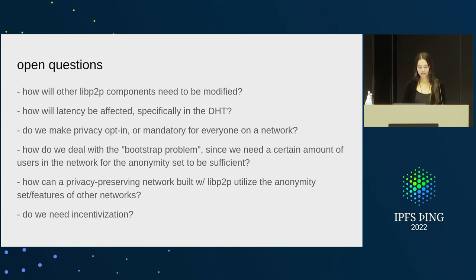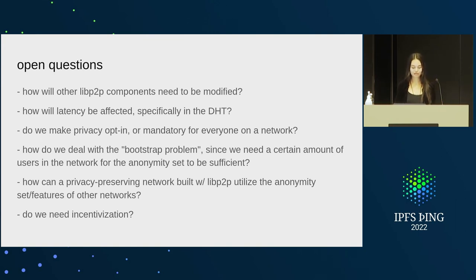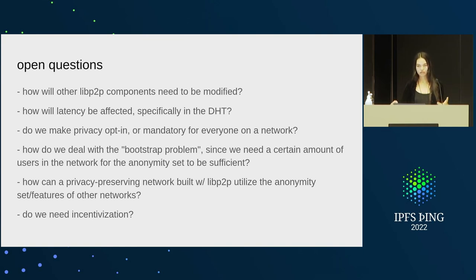How do we take into account network churn? If a node in your circuit leaves, how do you deal with that? Potential solutions include fallback circuits or multi-path circuits. Regarding LibP2P specifics — how would we need to modify other LibP2P components? There was some work done on a Tor transport that didn't fully work because other components still need to be modified. We also need to consider how latency will be affected, specifically for DHT lookups, and whether privacy should be opt-in or mandatory on a specific network.